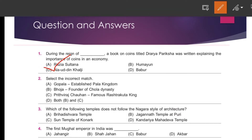Our next question asks for the incorrect match. Gopala established the Pala Kingdom — that's correct. Bhoja as founder of the Chola Dynasty — that's wrong. Prithviraj Chauhan as a famous Rashtrakuta king — that's also wrong. So the answer will be Option number D, both B and C.